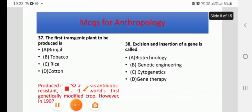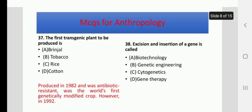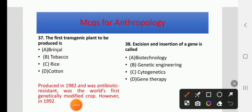The first transgenic plant to be produced — options are Brinjal, Tobacco, Rice, or Cotton. The right answer is B: Tobacco. It was produced in 1982, was antibiotic resistant, and was the world's first genetically modified crop.